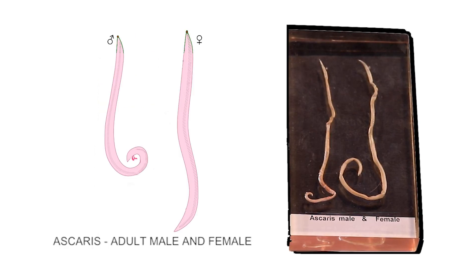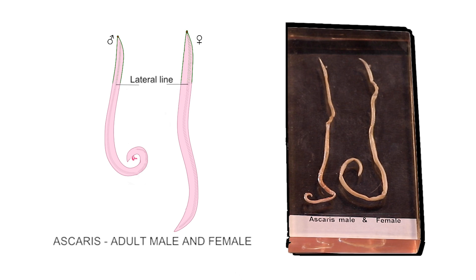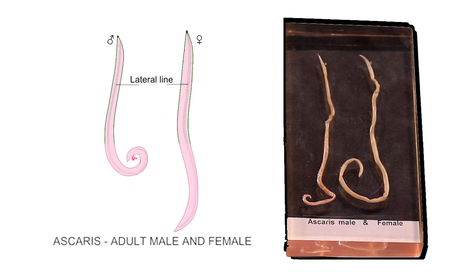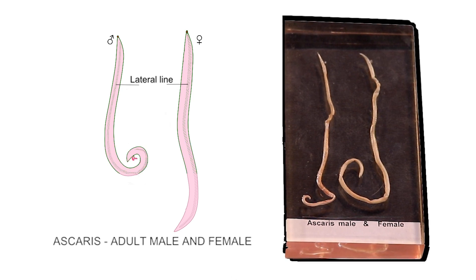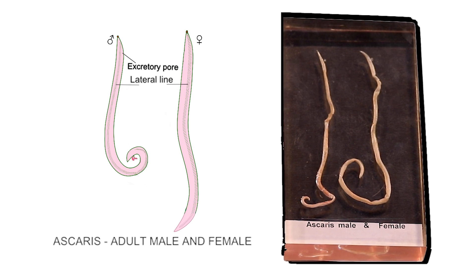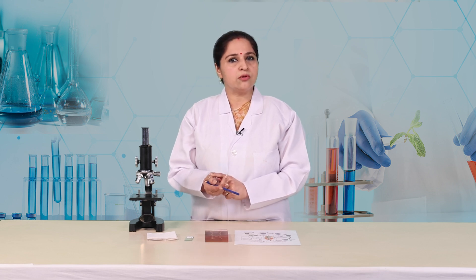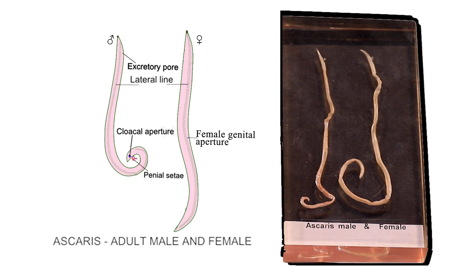Single longitudinal lines are present on the dorsal, ventral, and on the 2 lateral sides all along the length of the body. The lateral lines are comparatively more distinct than the rest. Slightly behind the anterior end on the ventral surface, an excretory pore is present. In the male Ascaris, the digestive and reproductive systems open through a single opening called the cloaca, through which a pair of penial spicules protrude out during copulation. In females, both systems open separately — the genital aperture is present mid-ventrally at about one-third distance from the anterior end, while the anus opens at the posterior end.